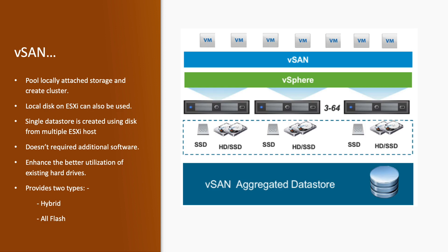vSAN pools locally attached storage and creates a cluster. In earlier scenarios, ESXi hosts had local disks available that were largely unused. After vSAN came into the picture, you can utilize those local disks as well — you do not need to be dependent only on shared storage. A single data store is created using disks from multiple ESXi hosts, meaning you can combine and pool all those disks, create a data store, and use it for virtual machines. This enhances better utilization of your existing hard drives.